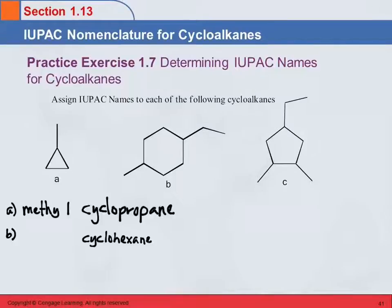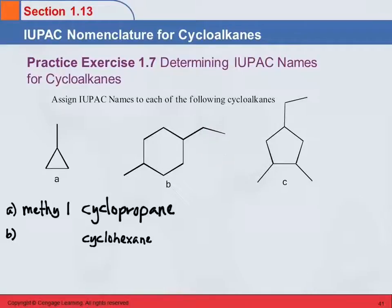We need to look at what are the names of the groups on it. Here we have this — this is one carbon, that's methyl. And this is two carbons, one and two, so that's an ethyl group. We've got an ethyl group up here and a methyl group down here. When we list those substituent names before cyclohexane, which one comes first? The ethyl — we're going to put them in alphabetical order. So: ethyl, methyl, cyclohexane.